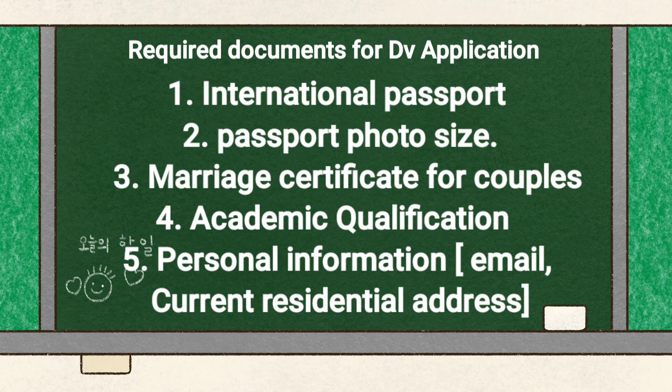The next document is your academic qualification. The least academic qualification you need before you take part in this DV process is an SS certificate. If you have an SS certificate, you can take part in this DV process. But if you don't have one, unfortunately the US Department of State is demanding that you have two years of work experience before you can take part in this application process.